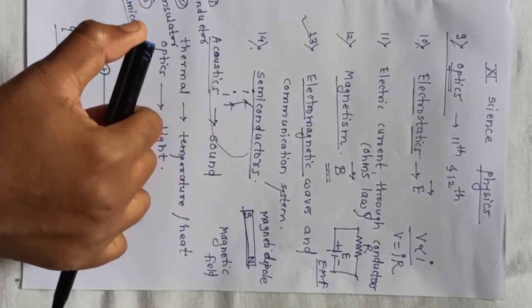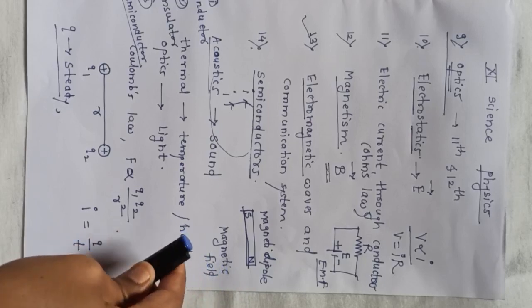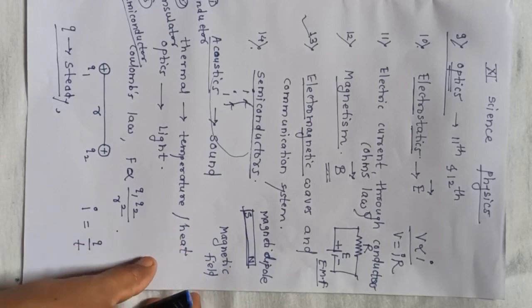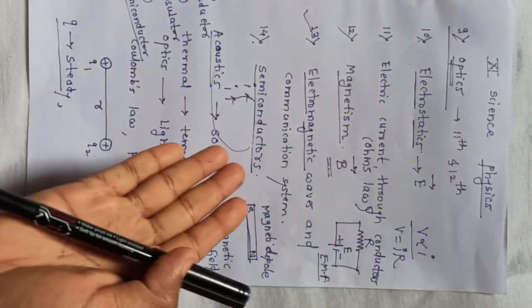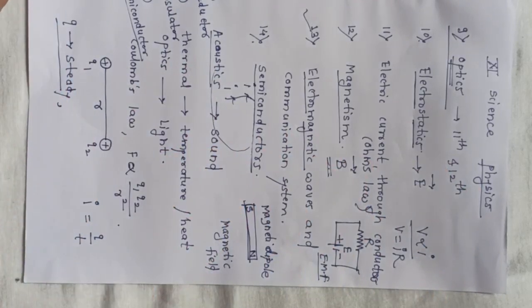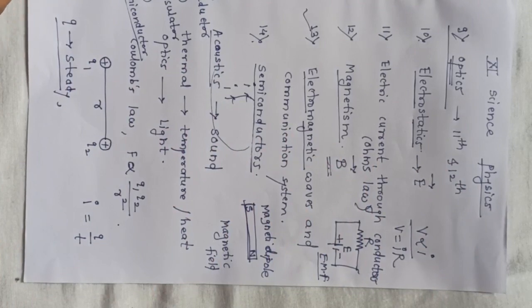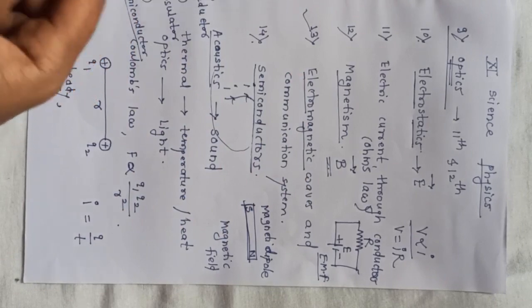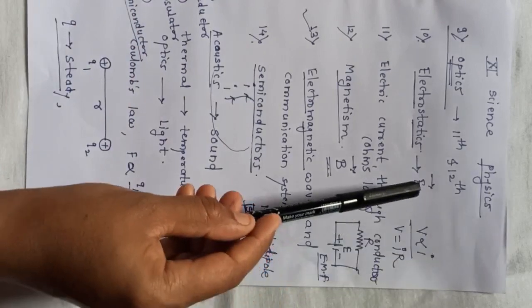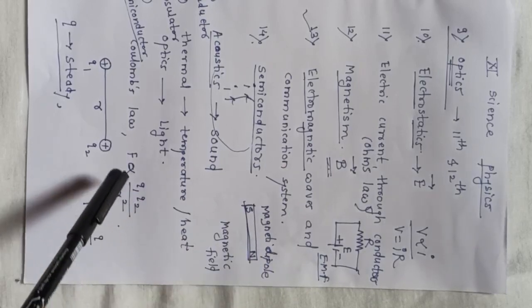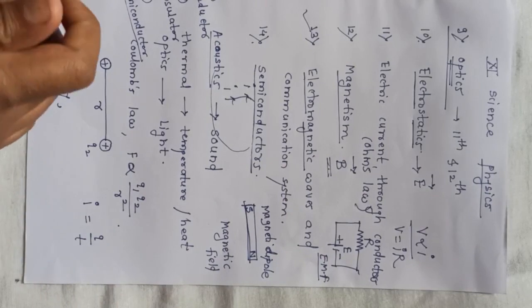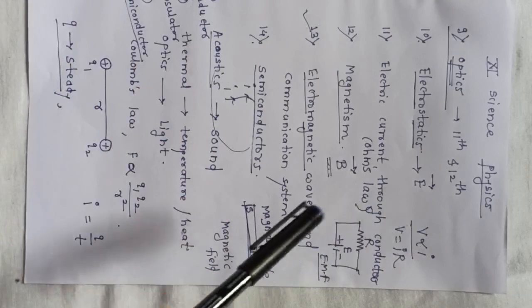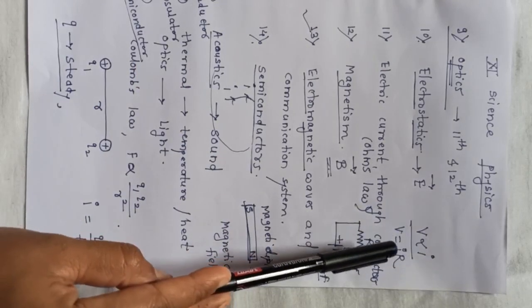One more thing: Jadav sir has started the topic Units and Measurements in section first, and that chapter is very important among all 14 topics because you study the units of different physical quantities and their dimensions. In section second also, we shall encounter different physical quantities such as wavelength, frequency, potential difference, voltage, electric current, electric field, magnetic field, EMF, charge, force, and distance. I will not separately teach you how to find units and dimensions here.